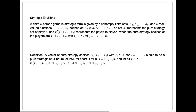These functions u1 through un will tell you the payout to each player — player 1, player 2, through player n — if some particular set of pure strategy choices x1, x2 through xn are chosen by the n players. So u1 of x1 through xn tells you player 1's return, u2 of x1 through xn tells you player 2's return, etc.